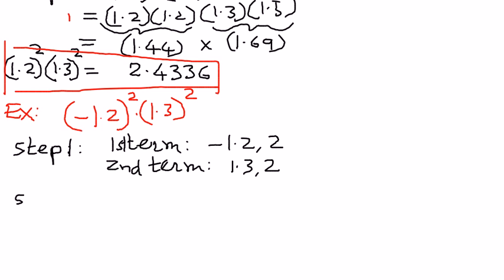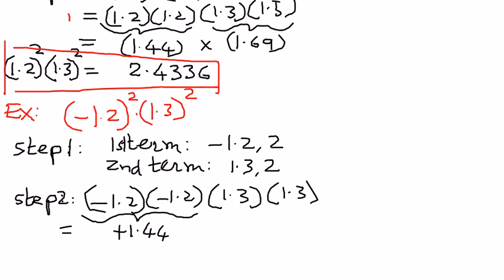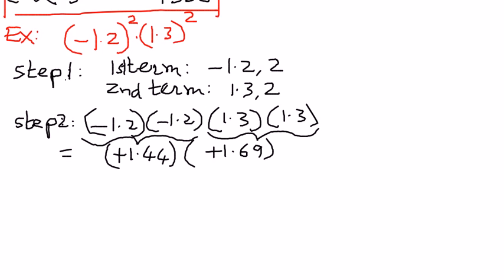Now we are ready to apply the concept. The number of times the base term needs to be repeated is given in the exponential term. We expand the first term as negative 1.2 times negative 1.2, and the second term as 1.3 times 1.3. Simplifying: 1.2 times 1.2 is 1.44, and negative times negative is a positive, so that gives us positive 1.44. Then 1.3 times 1.3 is 1.69, with a positive sign. Multiplying: 1.44 times 1.69 equals 2.4336.